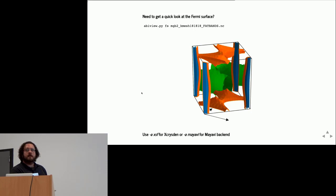If you are interested in metals and you want to visualize the Fermi surface, use abiview FS. This is the matplotlib backend, but other applications are supported as well.